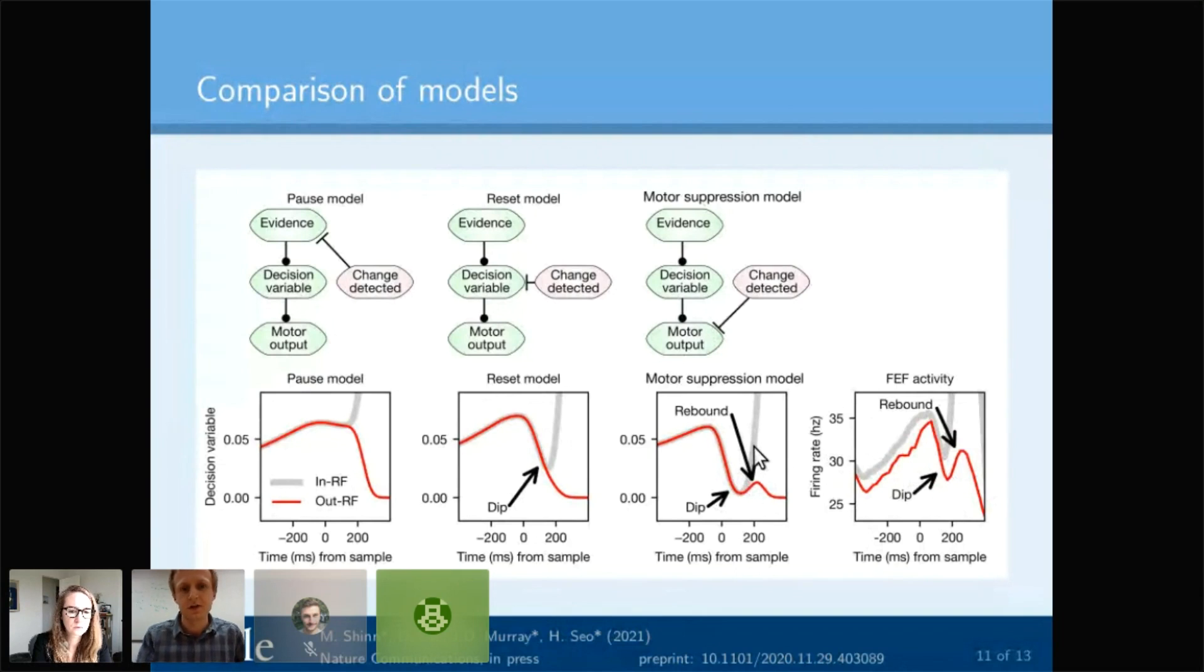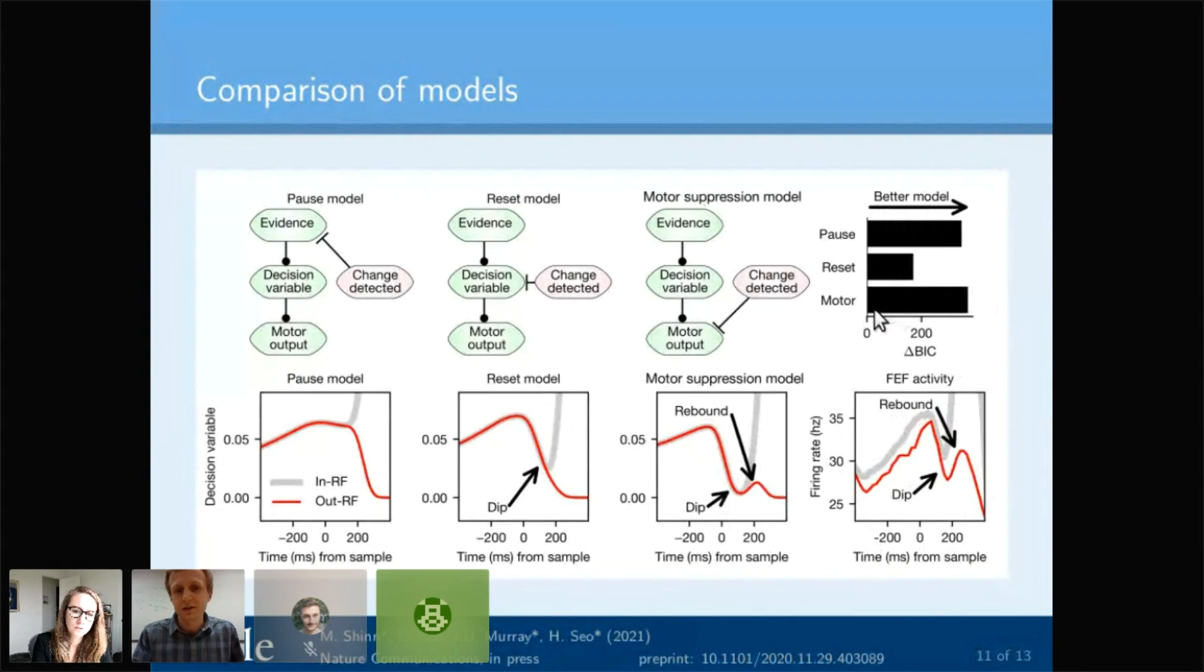We can also look at what happens when we're fitting these models. Since these are all generalized drift diffusion models, we can easily fit them to data and evaluate their log likelihood. We have the strongest model coming from the motor suppression model—this model where we're inhibiting motor output. So it's great for predicting frontal eye field activity and also great at behavior.